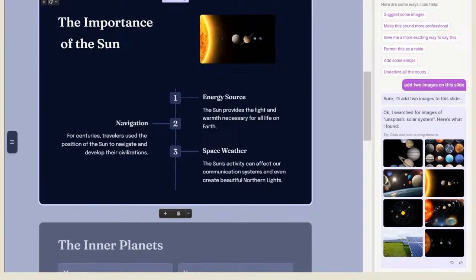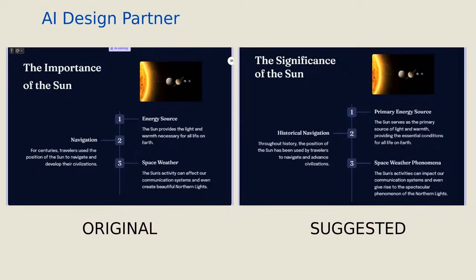I selected one of the cards to change the slide to a professional voice. It gave me two options in the response: the original and a suggested version. In the suggested version, there were language changes — for example, instead of 'navigation' it said 'historical navigation,' and the language overall was slightly different. It tried to keep the content while improving the language. Even the title changed from 'The Importance of the Sun' to 'The Significance of the Sun,' which sounds more professional.